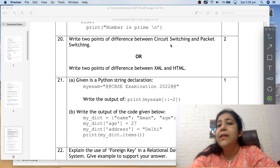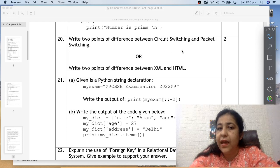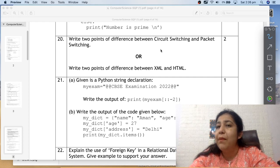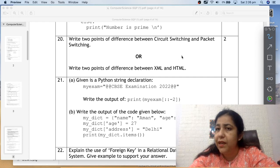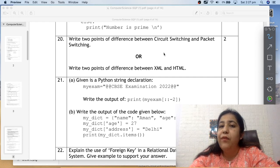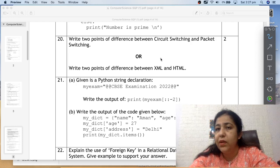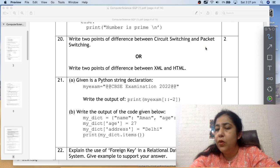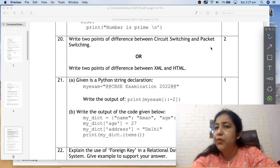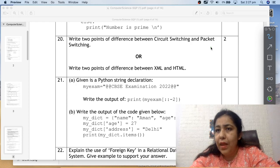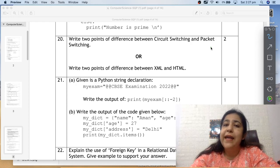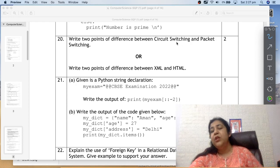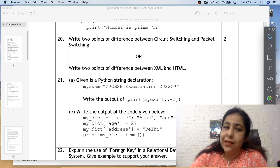Question 20 is: write two points of difference between circuit switching and packet switching. Whenever you write differences, make sure that you write the heading properly. Circuit switching is a dedicated connection between two devices. Whereas packet switching is not dedicated connection. In circuit switching, before transmission starts, connection is established. So first connection is established, after that there is no limit on how much data passed. When the whole data is transmitted, connection is released.